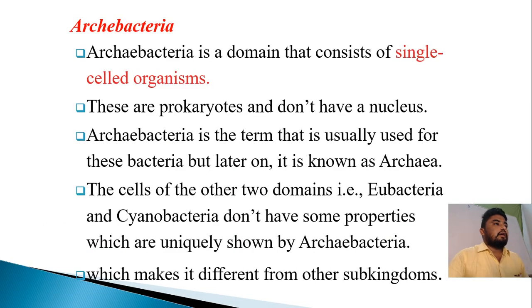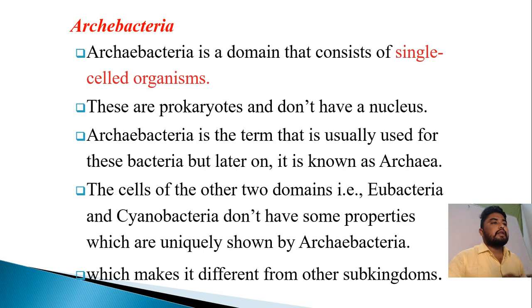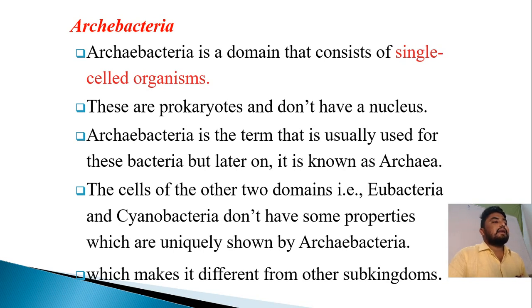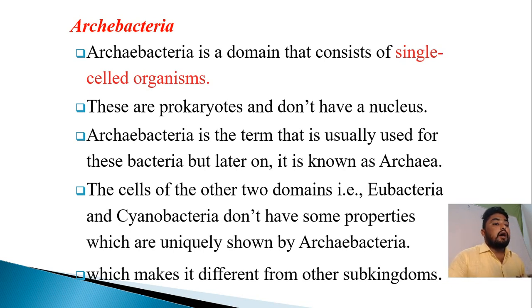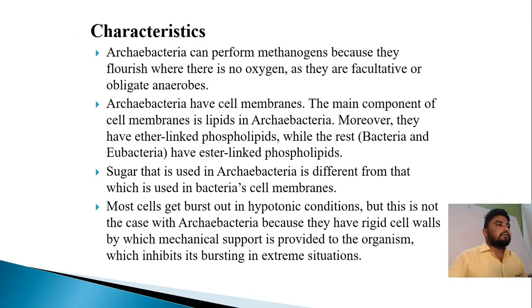The special group of bacteria — the first one is archibacteria. Archibacteria is a domain that consists of single-celled organisms. These are prokaryotes and don't have a nucleus. The term archibacteria is usually used for this group, but later it became known as archaea. The cells of the other two domains — eubacteria and cyanobacteria — do not have some properties which are uniquely shown by archibacteria, which makes it different from other sub-kingdoms.